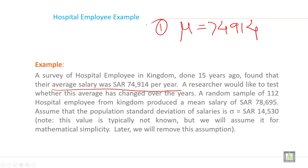Then second information. Researcher would like to test whether this average has changed. This is the second information changed. He wants to test whether the salary has changed, means either increase or decrease both.